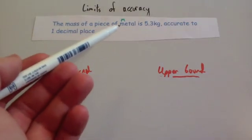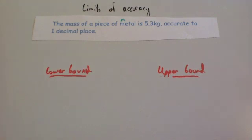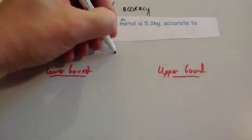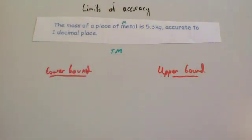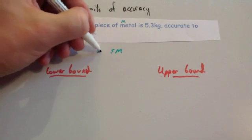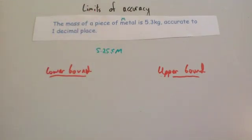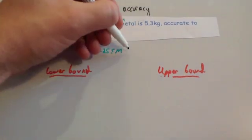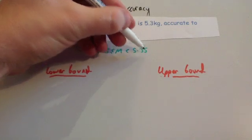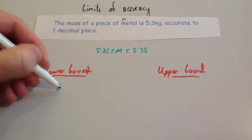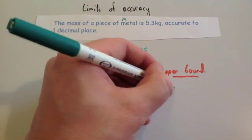The mass of a piece of metal, M, is 5.3 kilograms, accurate to one decimal place. For the lower bound: 5.29, 5.28, 5.27, 5.26, and 5.25 would all round up to 5.3, whereas 5.24 would round down. So 5.25 is the lower bound. For the upper bound: 5.31, 5.32, 5.33, 5.34 all round down to 5.3, so the boundary is 5.35 — it can't be 5.35, but that's the upper bound. So the lower bound is 5.25 and the upper bound is 5.35.